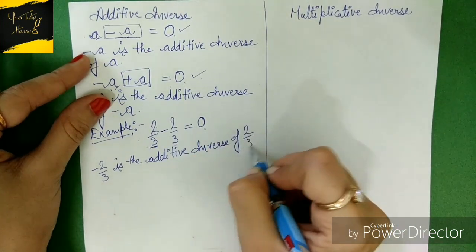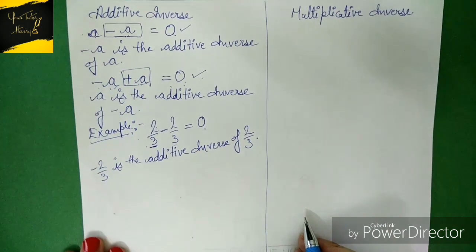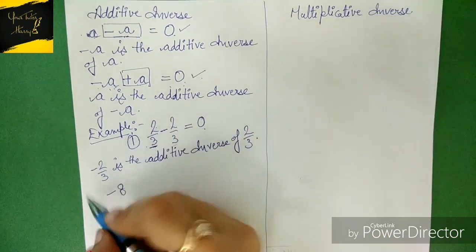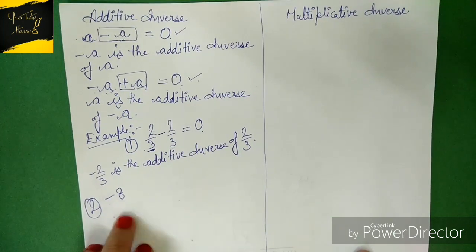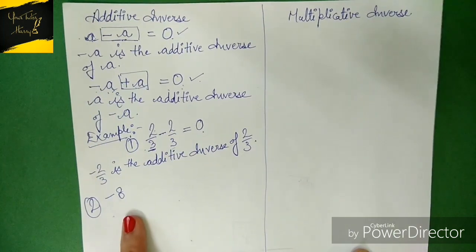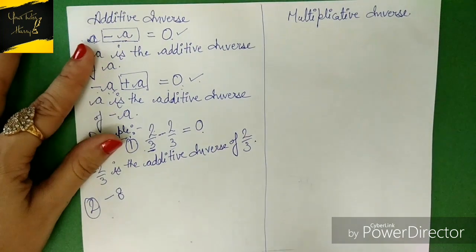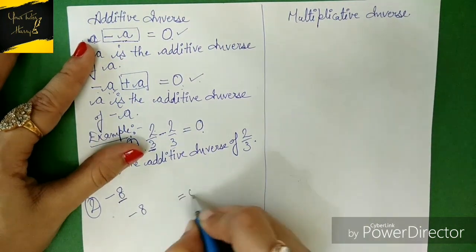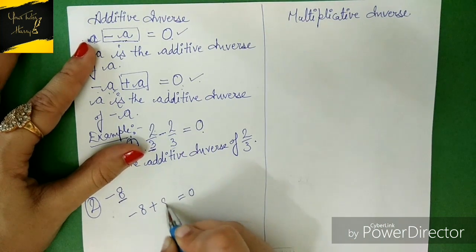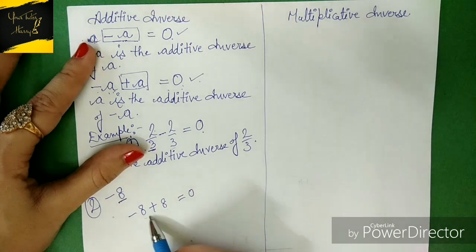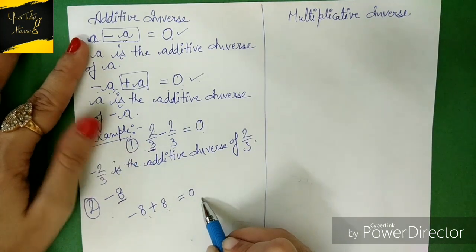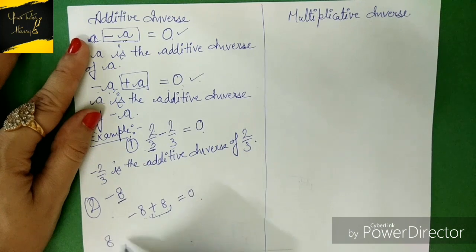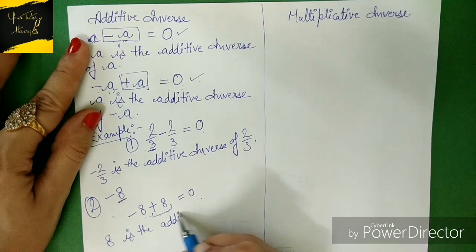Is it clear? Let's take one more example: I'm taking '-8'. We need to find the additive inverse of '-8'. What should be added or subtracted from '-8' to get a result of zero? We need to add '+8' to get zero. So we can say that '8' is the additive inverse of '-8'.